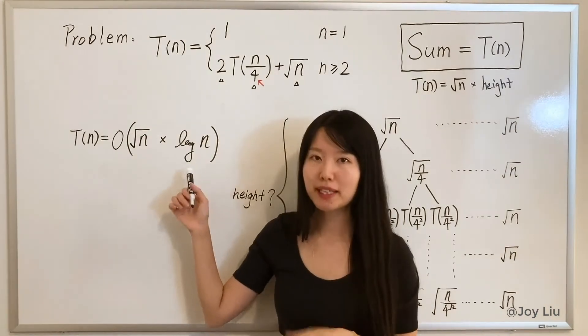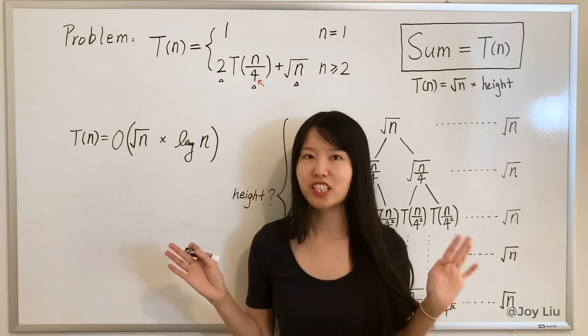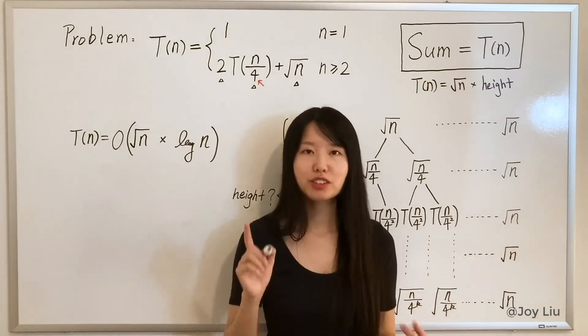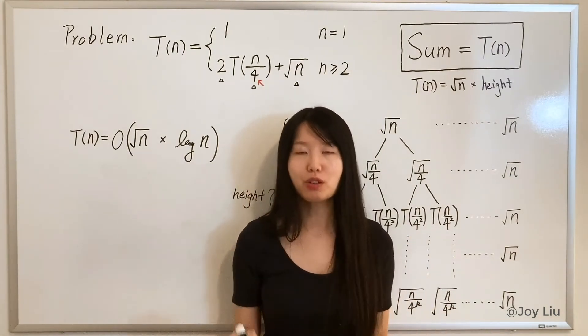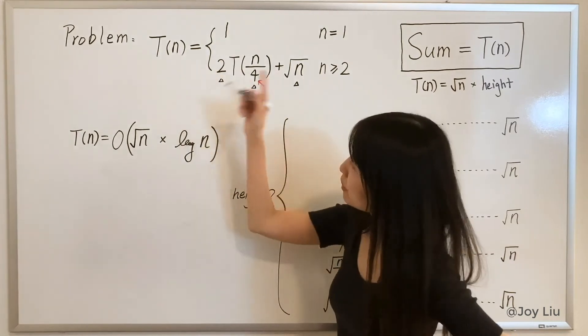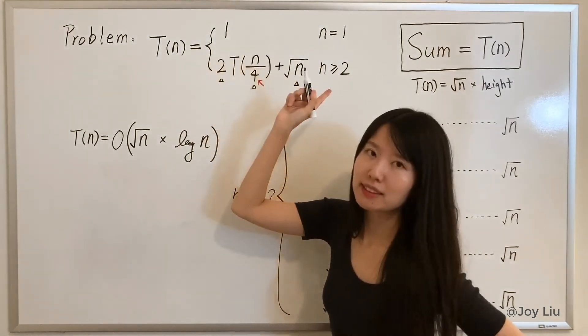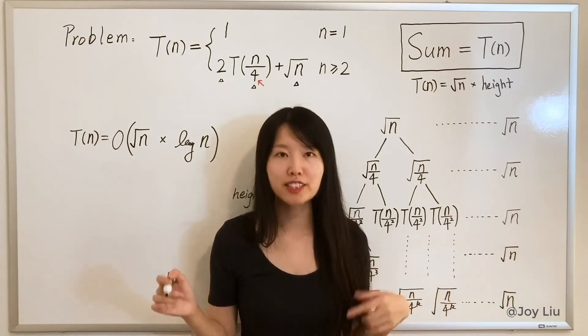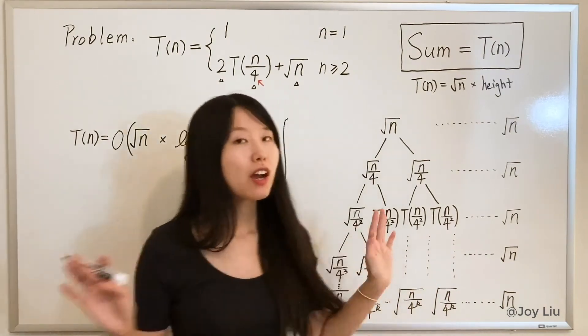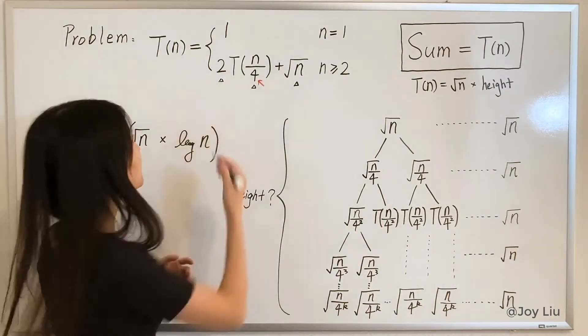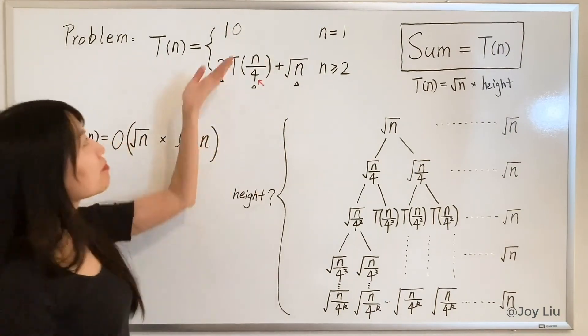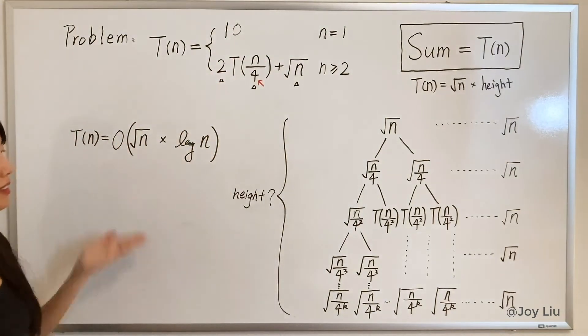There's just one more thing that I want to let you know, is if you see a recursion without the base, it's treated as 1 or a constant, and that doesn't affect the result. Let's say if it's 10, that doesn't affect it. Let's assume the base is C, and n equals to 1, and C equals to this part, right?